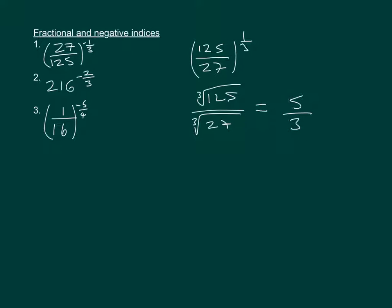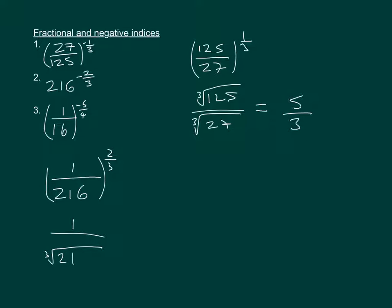Number two: we've got 216 to the power of minus two thirds. So that's going to be 1 over 216 to the power of two thirds. On the top it won't change, but on the bottom we're going to take the third root of 216 and then square it. The third root is 6, and when we square it we get 1 over 36.